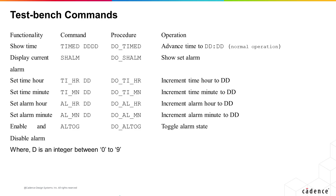Let us look at each of these procedures in detail. For example, for show_alarm, we need to press the show alarm signal for 5 seconds and then release it. The procedure drives show_alarm to 0 indicating the alarm press condition, then waits for 5 seconds, and then deactivates the show alarm signal by driving it to 1. All these procedures are defined in the package alarm_test in the file p_alarm_test.VHD.